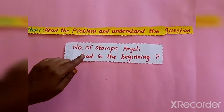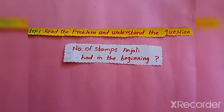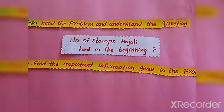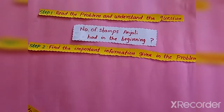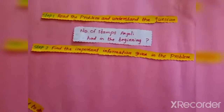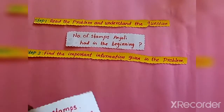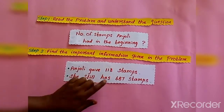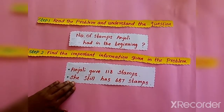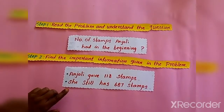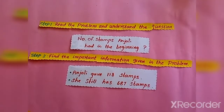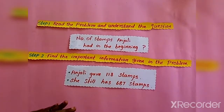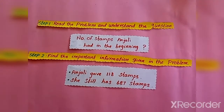After understanding the question, in step 2 we have to find the important information given in the problem. The first important information is that Anjali gave 118 stamps, and the second is that she still has 687 stamps with her. So list out those pieces of information.